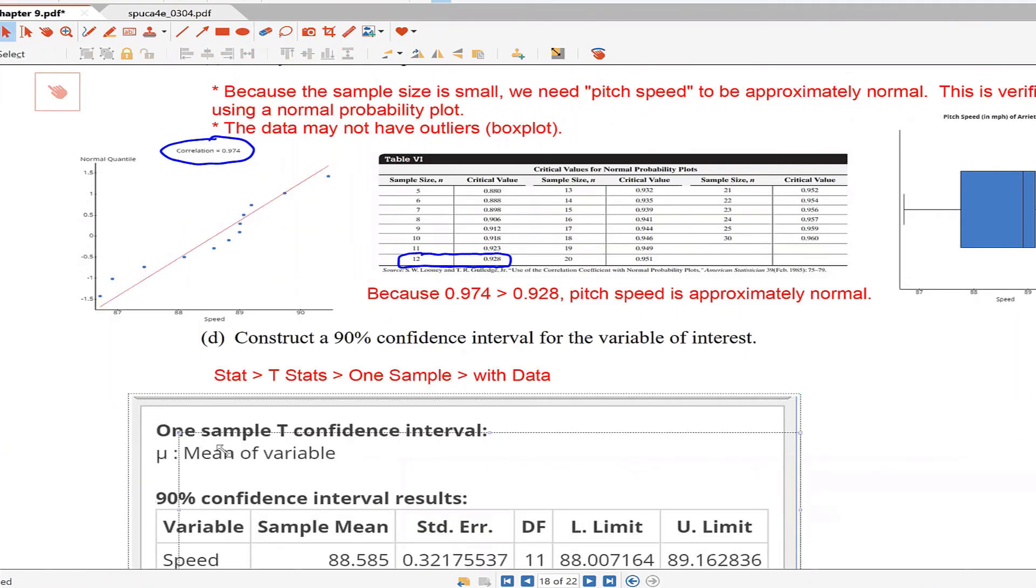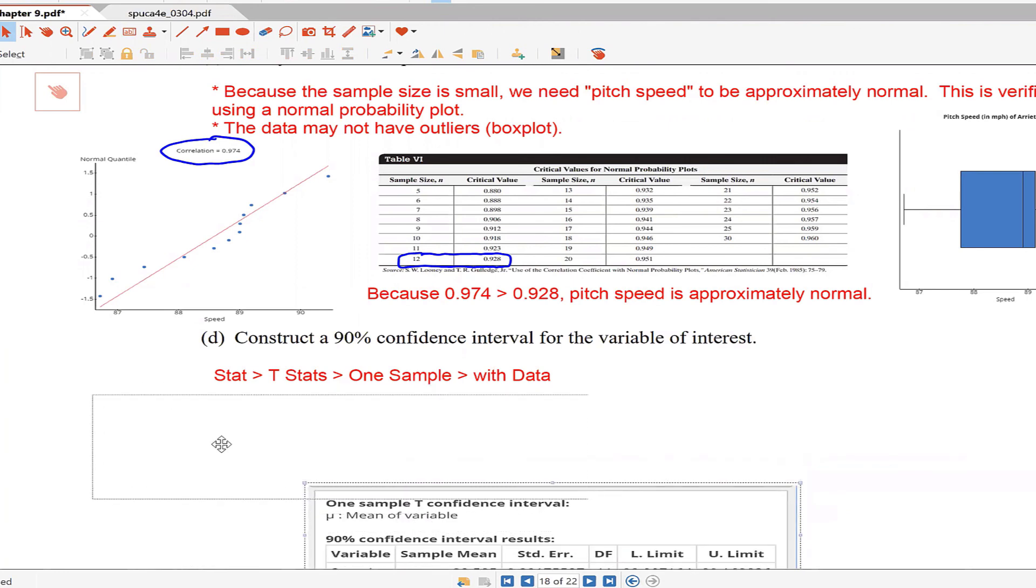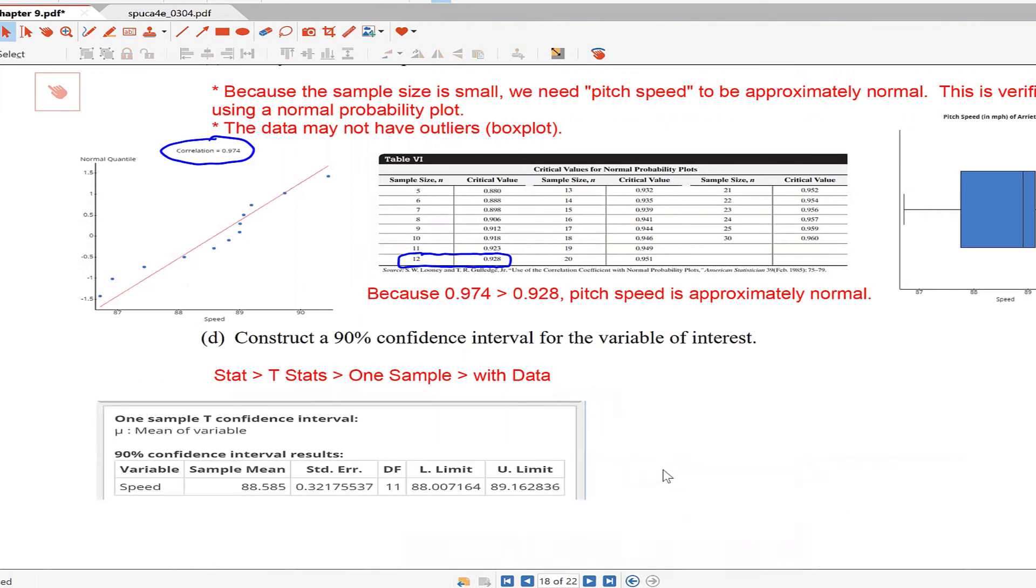So one uses proportion stats, which is why we're looking for the proportion. And then this one uses the t stats for the mean. That's it.